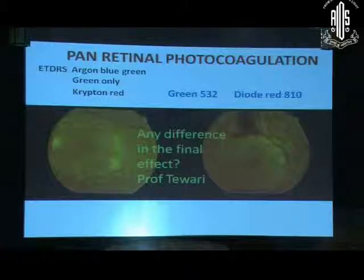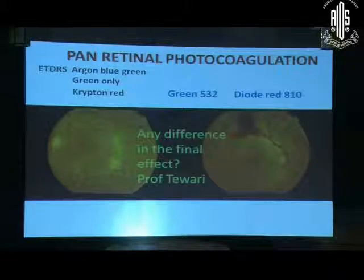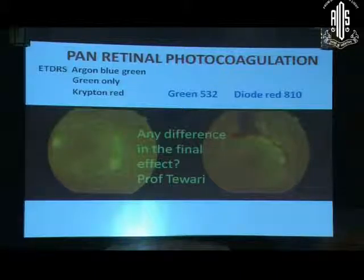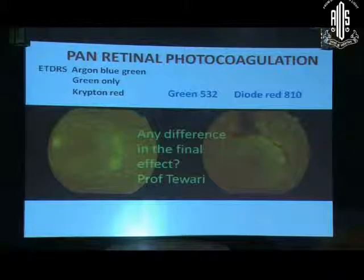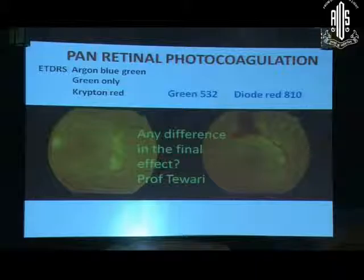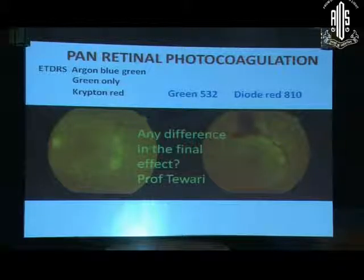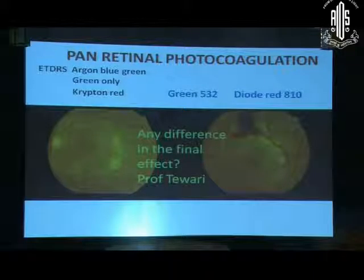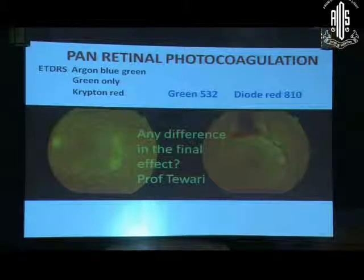Ideally speaking, the ultimate result is the same whether you do blue, green, or krypton red — the only thing is that collateral damage may be a little less histopathologically. But if you see the vision, our aim in diabetic patients is to maintain vision where it is, and in some patients it may improve. Krypton has one advantage: in hazy media, as when a patient is having a mild bleed, you can use it very safely. However, you cannot use blue-green in those situations.